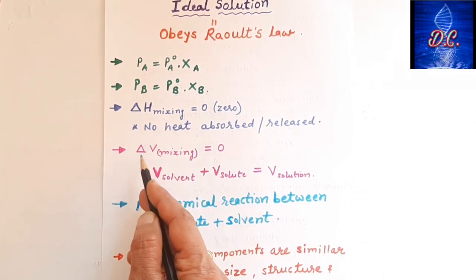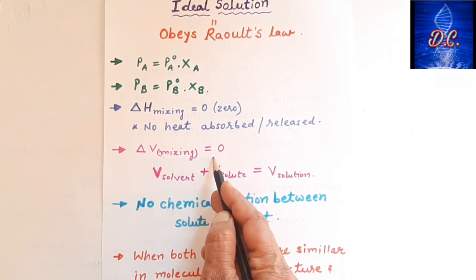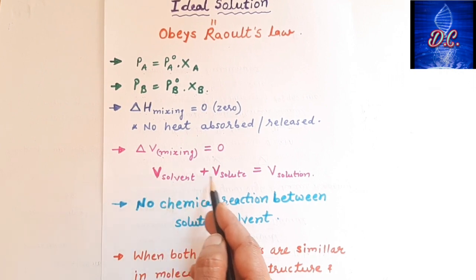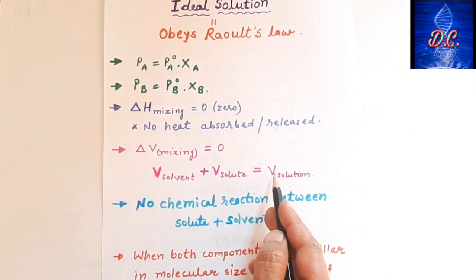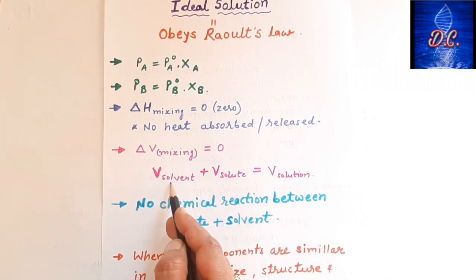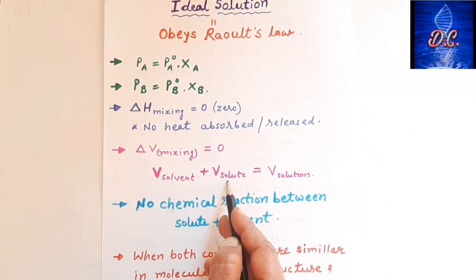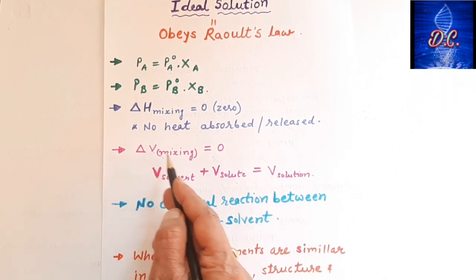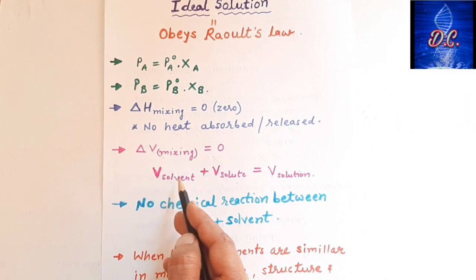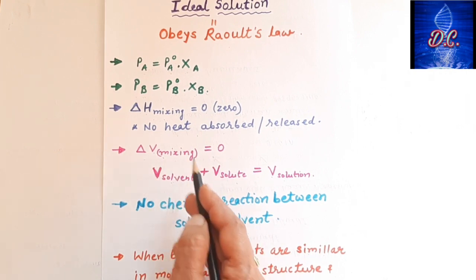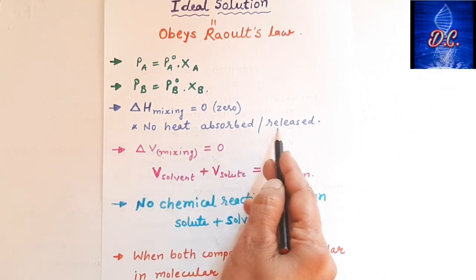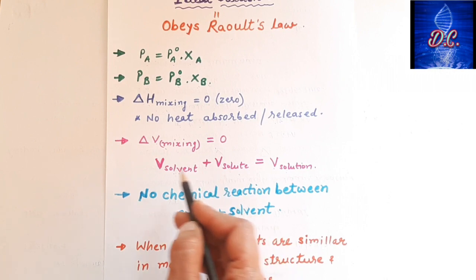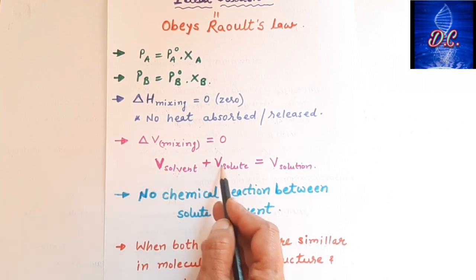The next characteristic is ΔV_mix is also equal to zero. This means that the volume of solvent plus the volume of solute equals the volume of the solution — there is no volume change on mixing of A and B components. If there is no volume change, then it is an Ideal Solution.